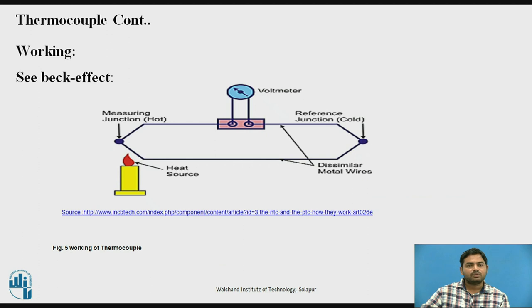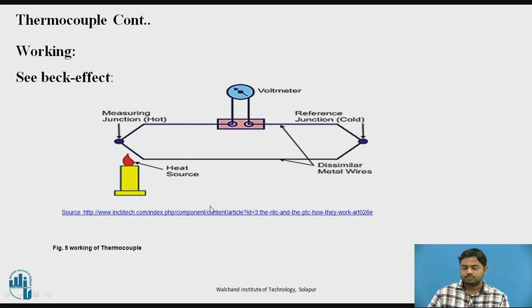The working of a thermocouple is based on the Seebeck effect. One junction is cold and the other junction is hot. In that case, a voltage is generated at that end, provided that the two metals are of different materials. This is called the Seebeck effect, and the voltage generated is proportional to the temperature.